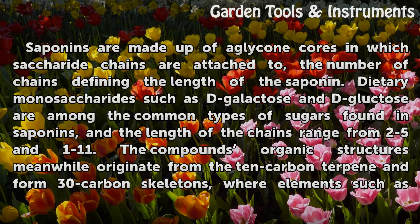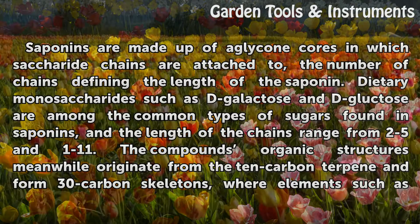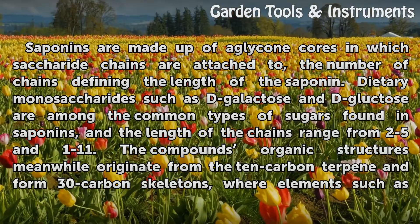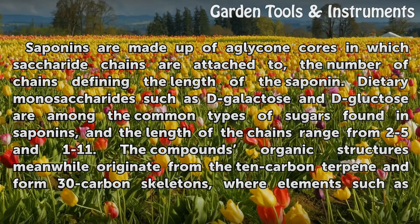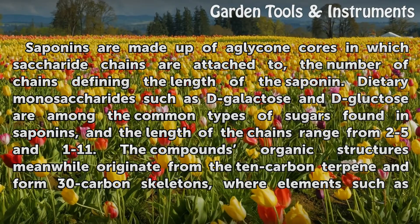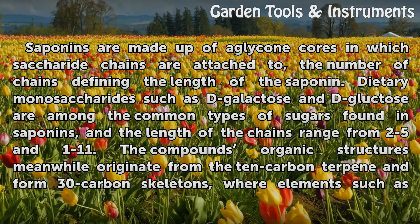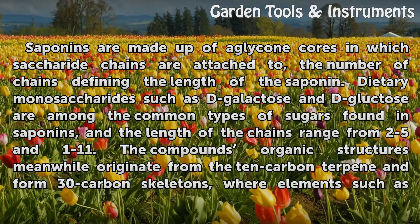Saponins are made up of a glycone core in which saccharide chains are attached. The number of chains defines the length of the saponin. Dietary monosaccharides such as D-galactose and D-glucose are among the common types of sugars found in saponins, and the length of the chains range from 2–5 and 1–11.